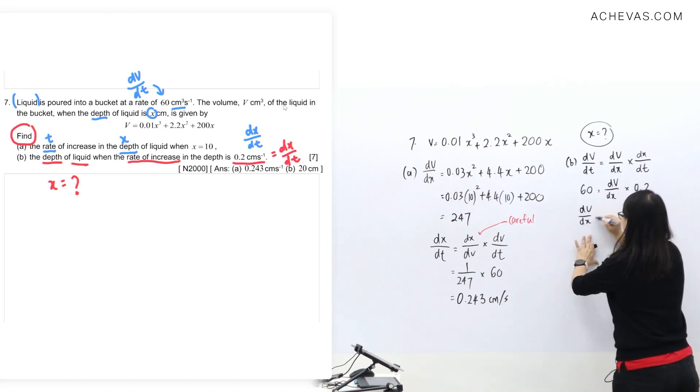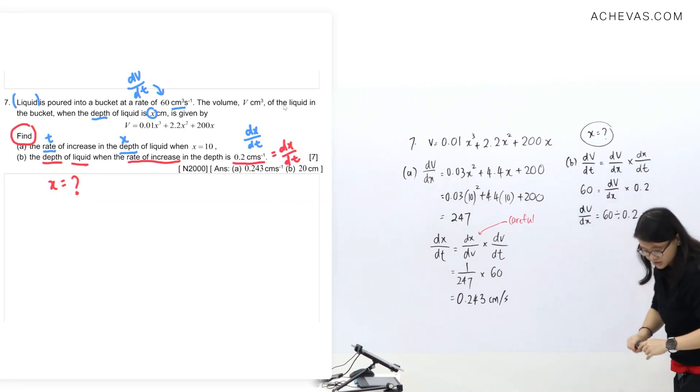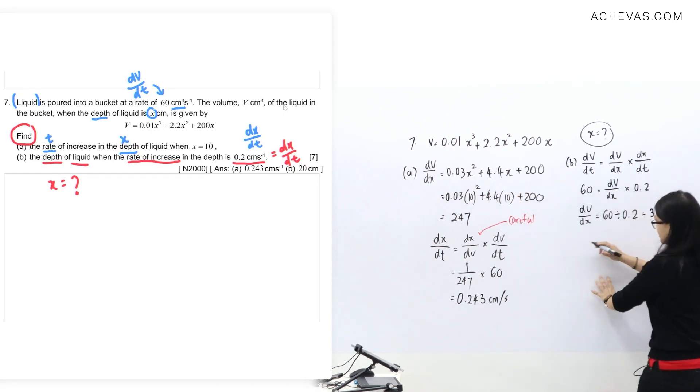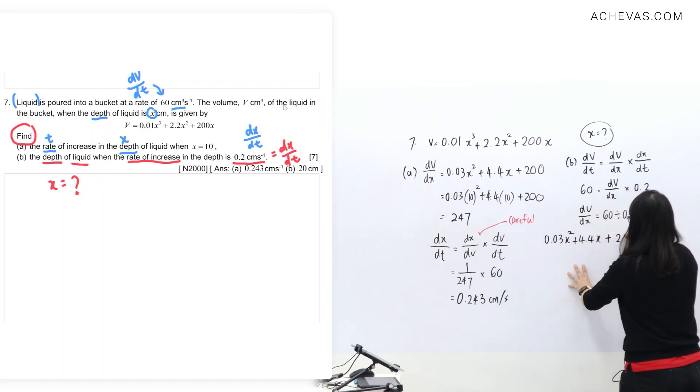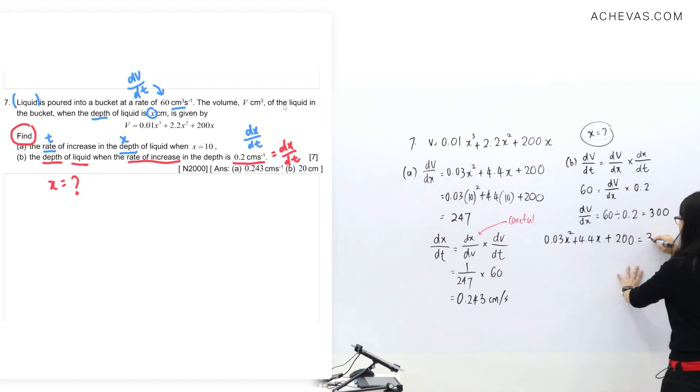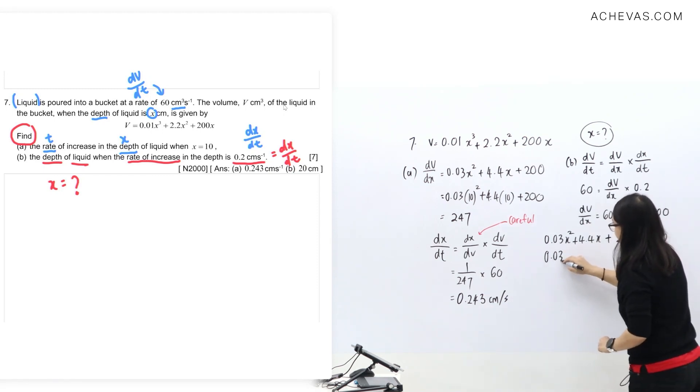I'll do one more step, so it's going to be 60 divided by 0.2. Let me see what answer I have here: 300. I get 300 here. So now I'm going to use this equation: 0.03x² + 4.4x + 200 is equal to this dV/dx value of 300. So let's arrange to zero, or you want to multiply to get rid of the decimal first - also can.